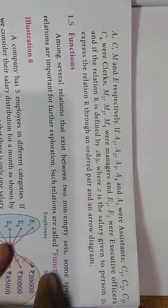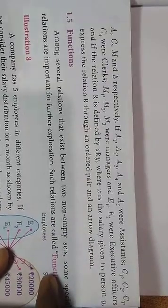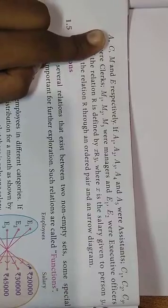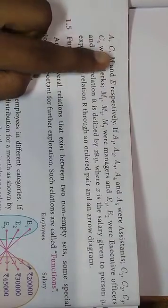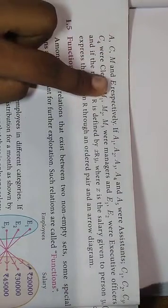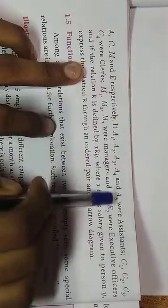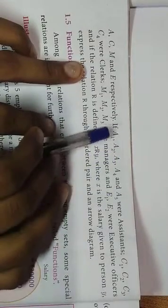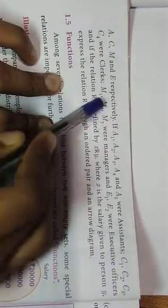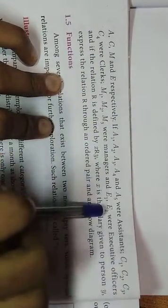So this is the company that says A means assistant, clerk, manager and executive officer. Here are salaries. So what is the name of the company? The first name is A1, A2, A3, A4, 4 clerk, 3 managers, 2 executive officers.